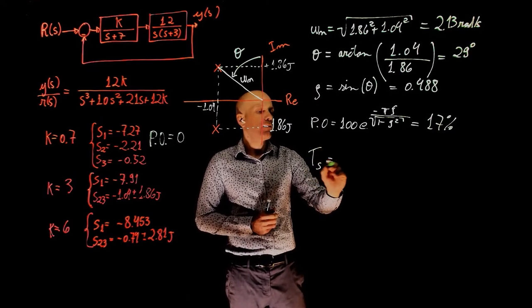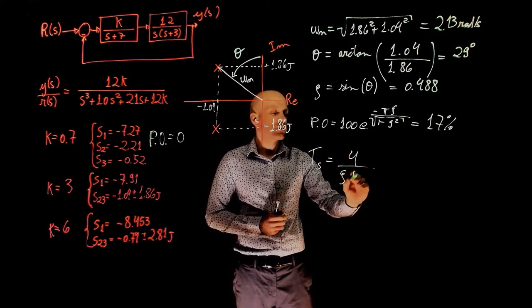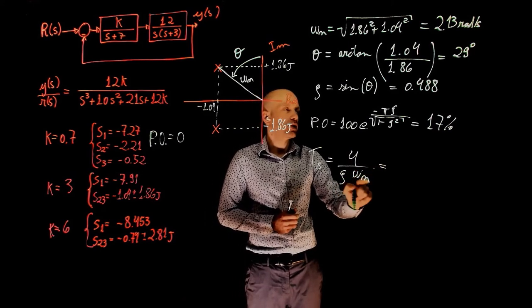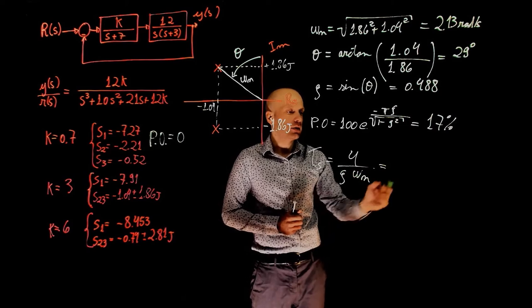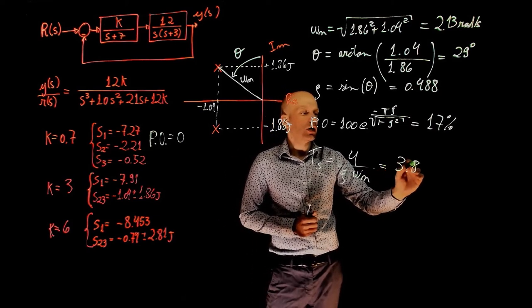The settling time, we know that is 4 over ζ times ωn. We have ζ and ωn, ζ is here, ωn is there. The settling time is 3.8 seconds.